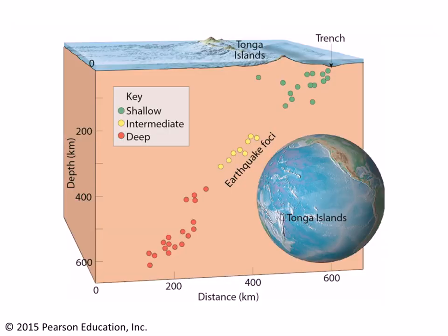Most earthquakes on Earth are associated with plate boundaries — about 95% of them. Some of those earthquakes are at the Earth's surface, in other words, they're shallow. And at other locations, we see a pattern of progressively deeper and deeper earthquakes going into Earth's interior. These are known as subduction zones.